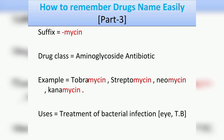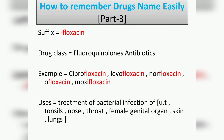The next suffix is '-mycin', which belongs to the drug class aminoglycoside antibiotics. Examples include tobramycin, streptomycin, neomycin, and kanamycin. Their uses include treatment of bacterial infections, eye infections, and tuberculosis.